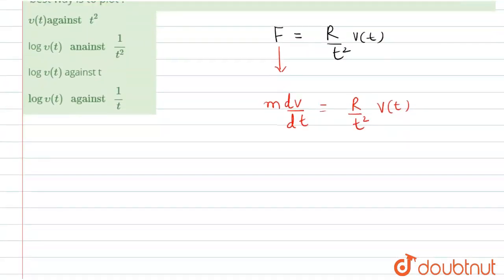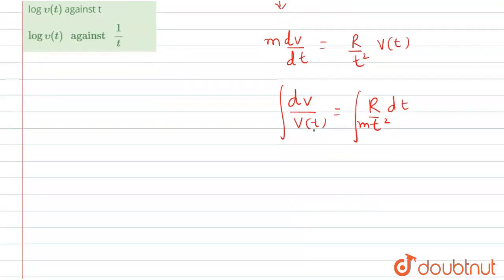So now use variable separable, that is dV upon V of T equals to R upon T square. Here M will be in the denominator of this side and dt will be there. Now integration both sides. So after integration both sides, we have ln of V.